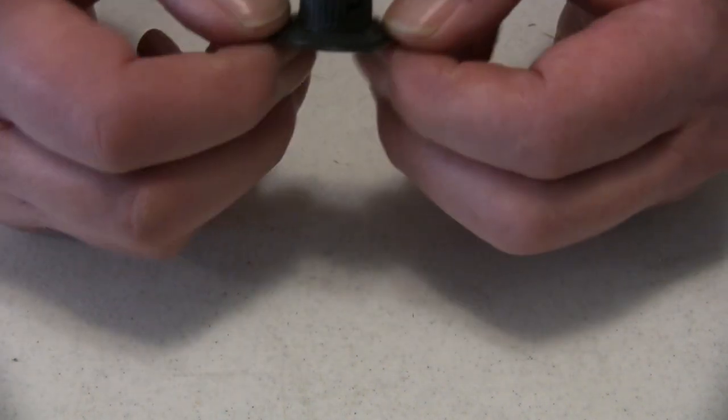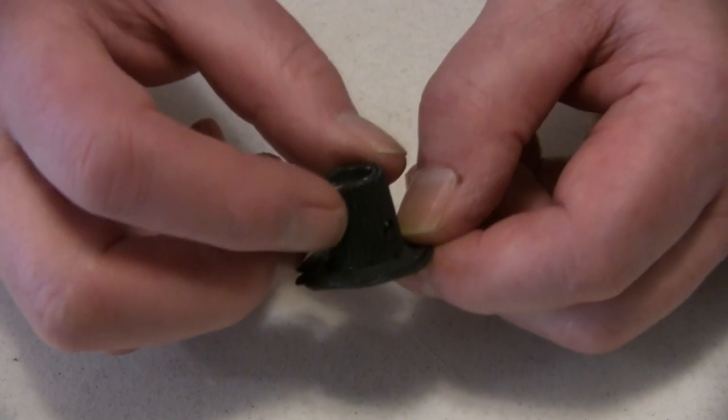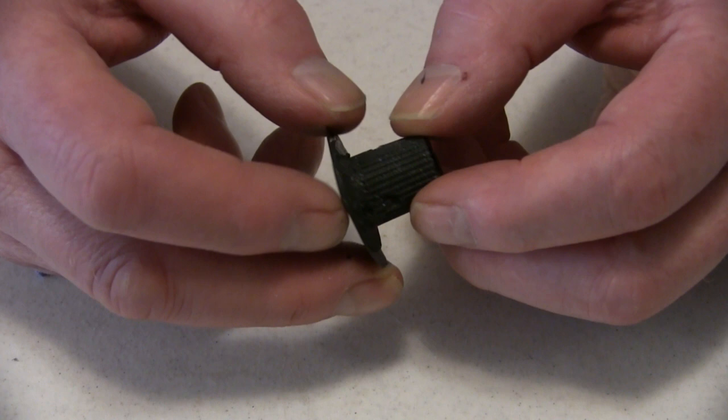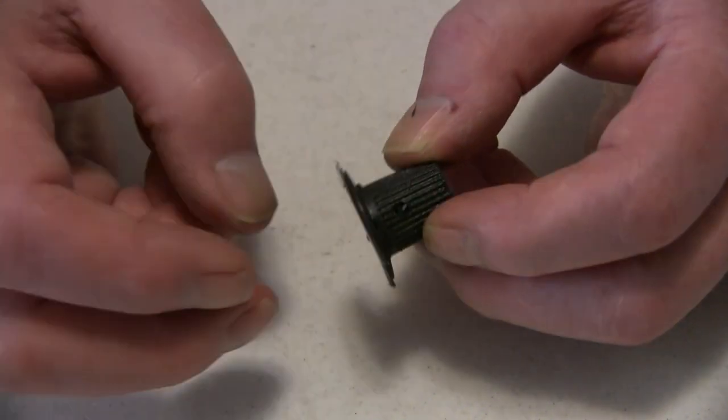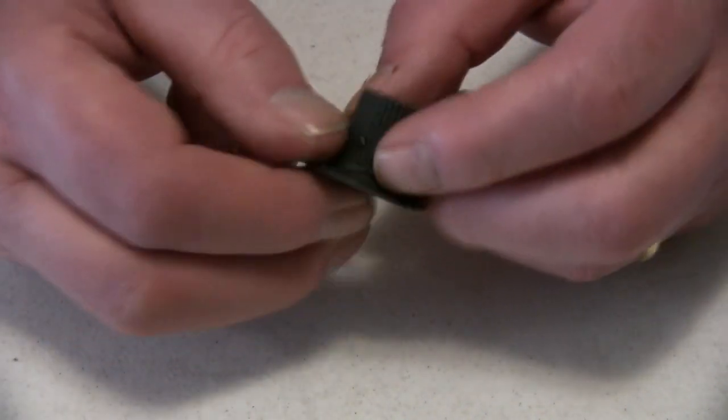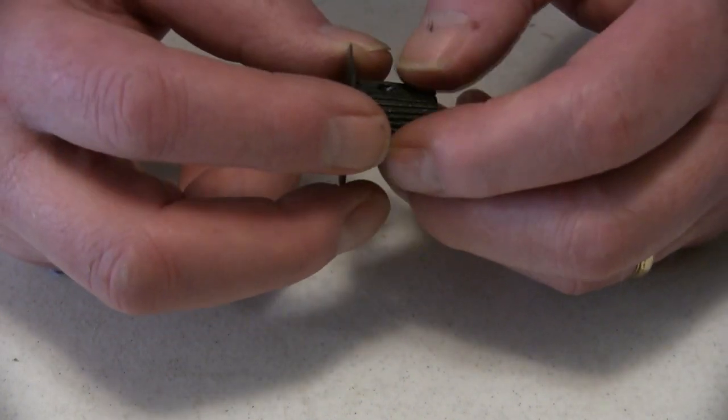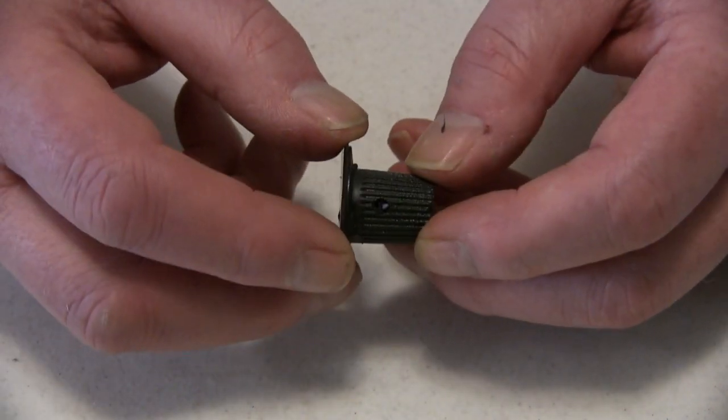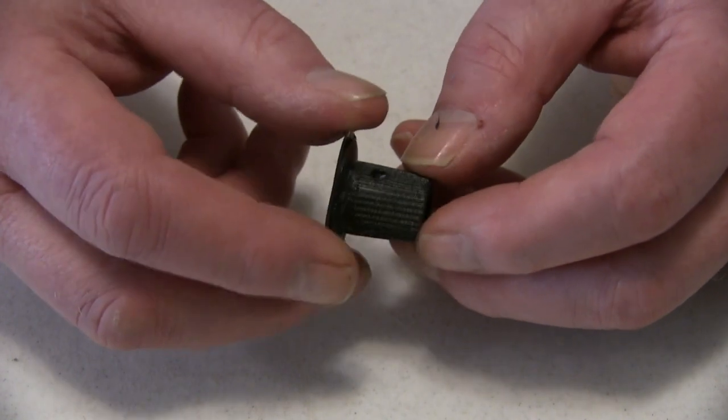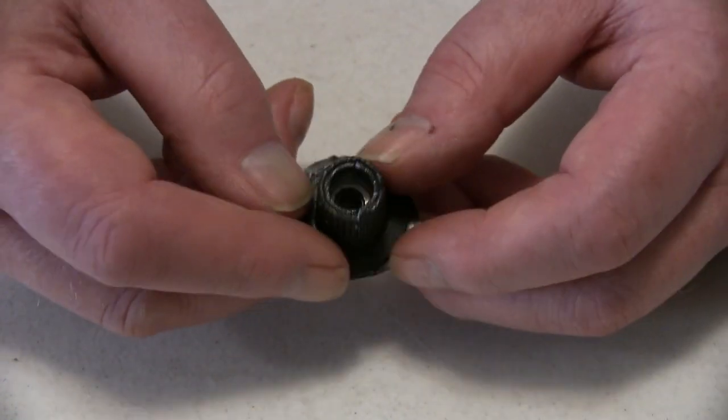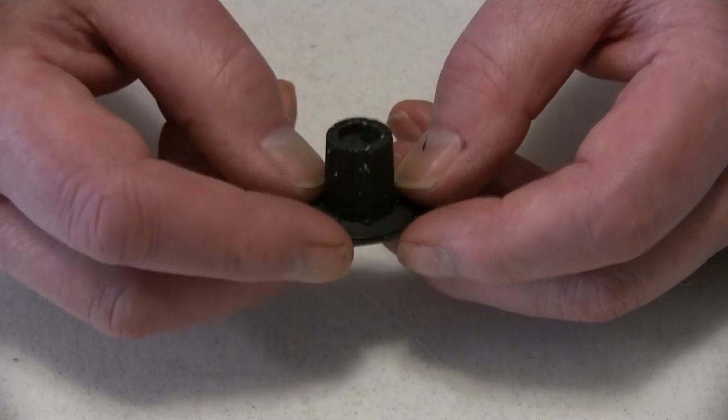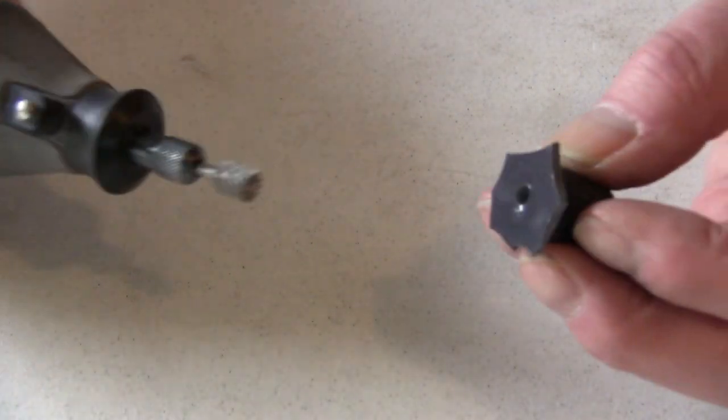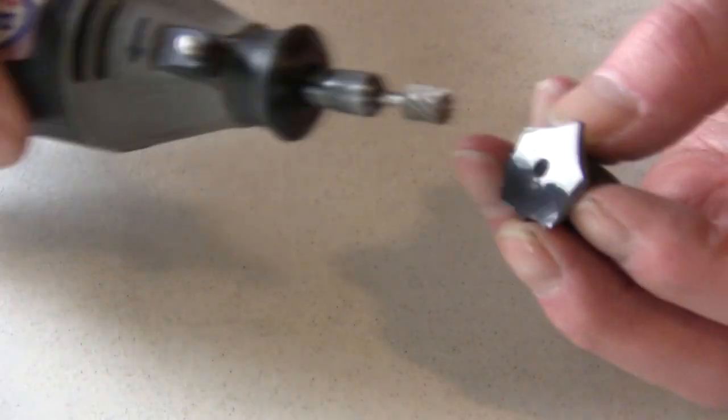But now I can machine off the extra skirt material. And machine it down to where the old skirt can be glued back on. I'll have to make some holes to reach the set screws. Which are somewhat covered up by material. But there's the knob.